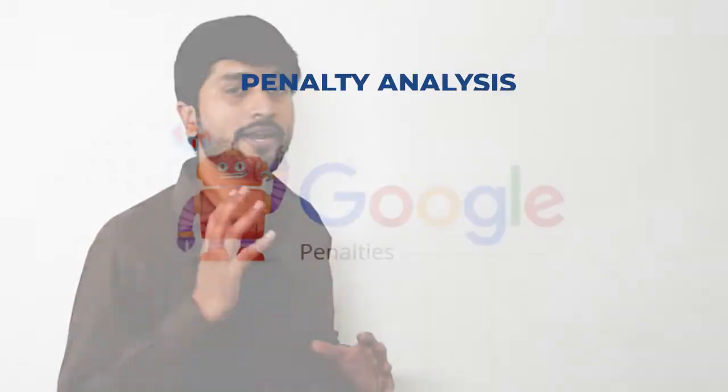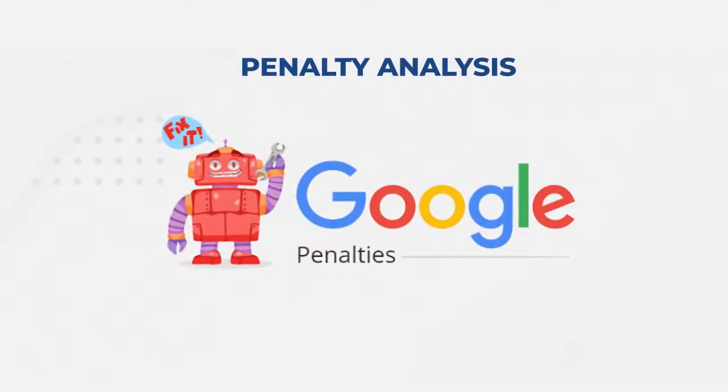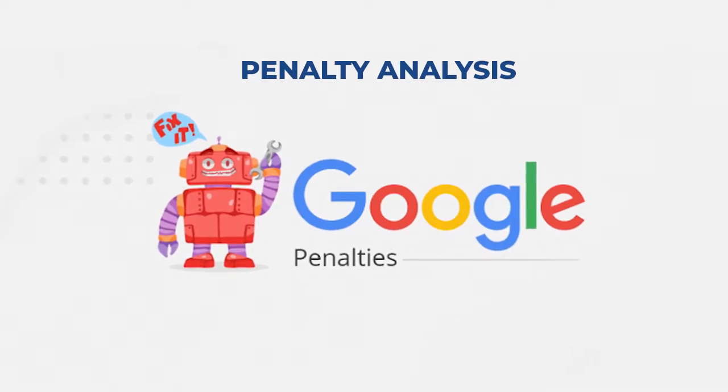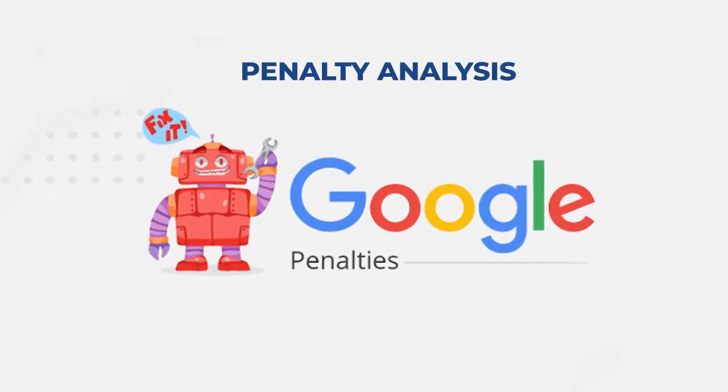The second thing you will do is penalty analysis. Check the website for Google's major algorithms, including core updates, core web vitals, mobile-first index, RankBrain, Panda, Penguin, and others, to align strategy according to findings.